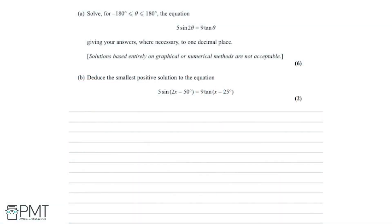Part a says we need to solve, for a given range of values of theta, the equation 5sin2θ = 9tanθ, giving answers where necessary to one decimal place. Solutions based entirely on graphical or numerical methods are not acceptable, so we're going to need to use some algebra. This is a six-mark question. Let's write down the equation: 5sin2θ = 9tanθ.